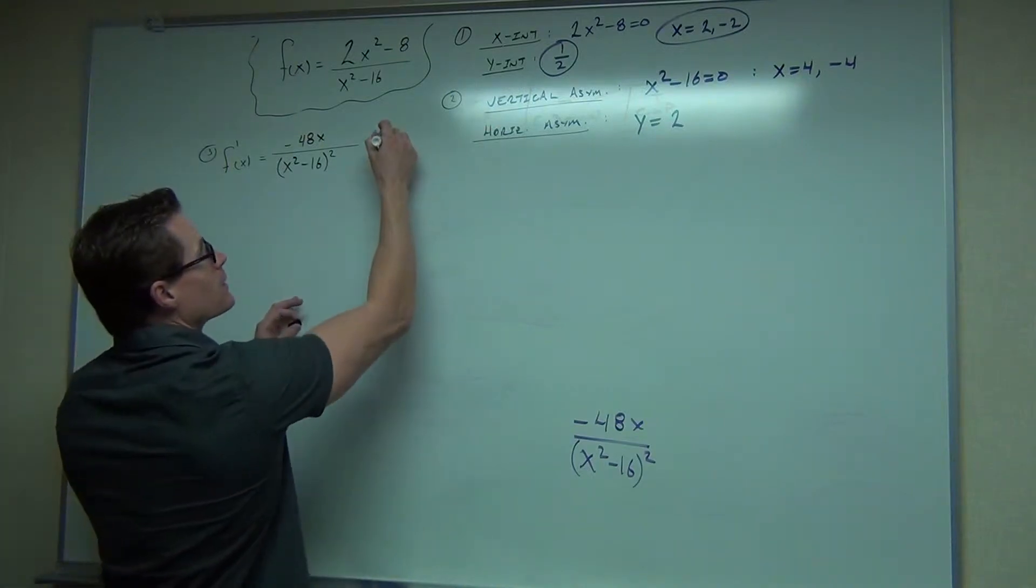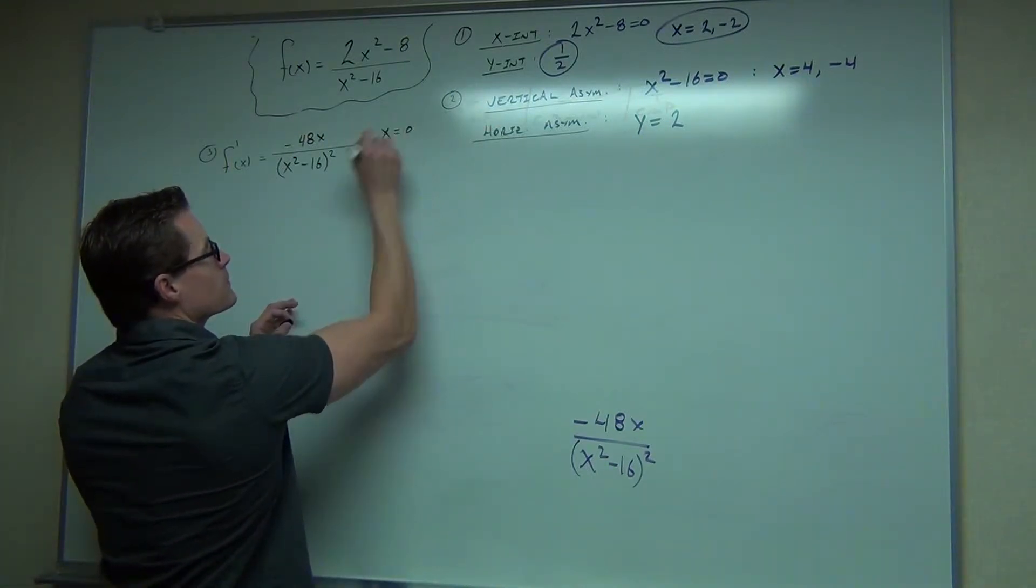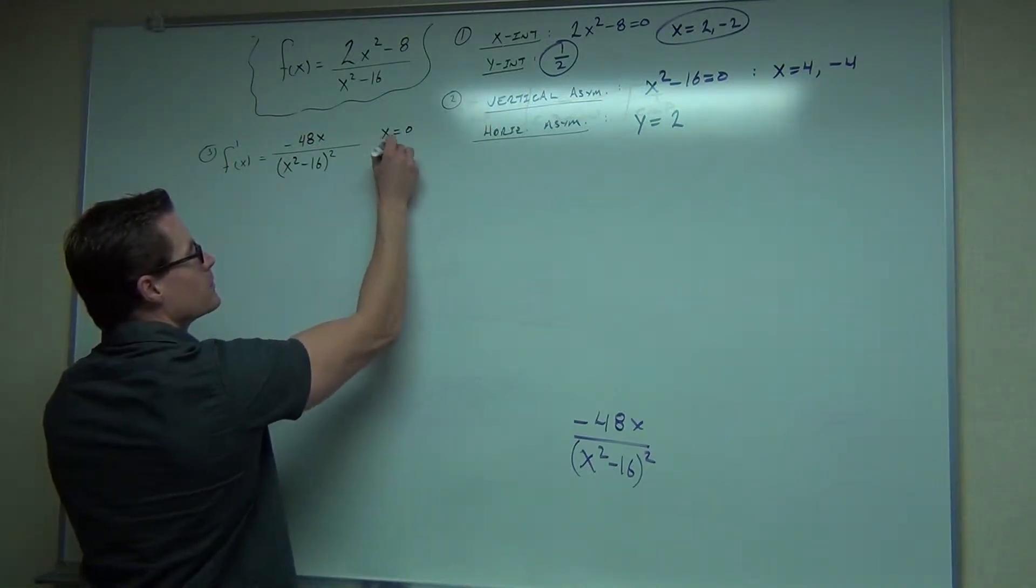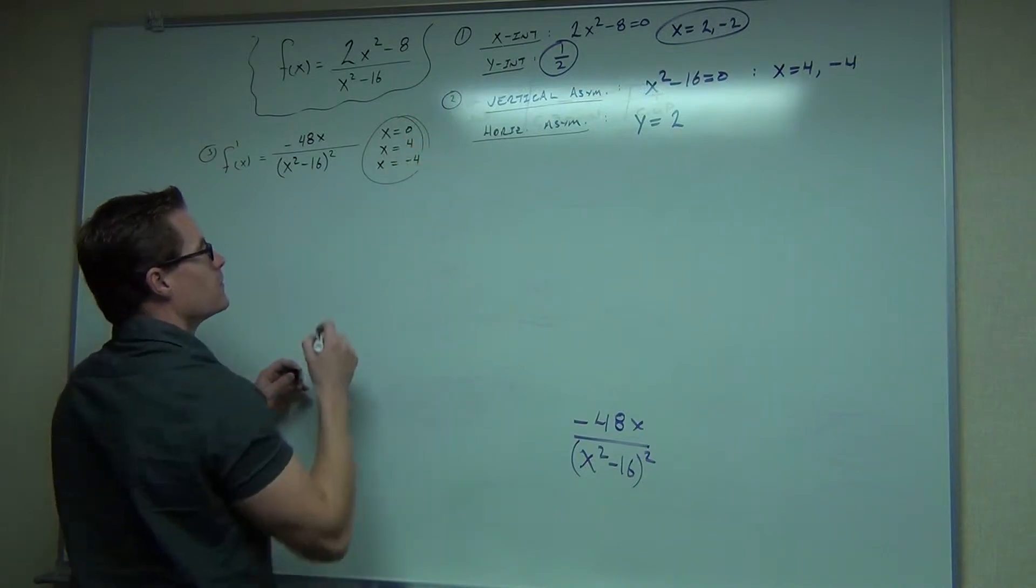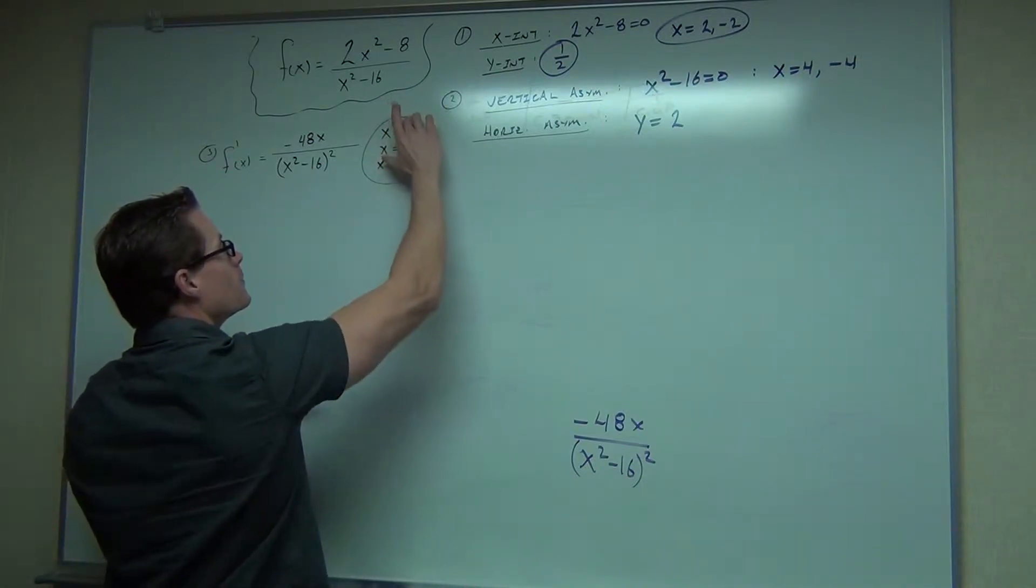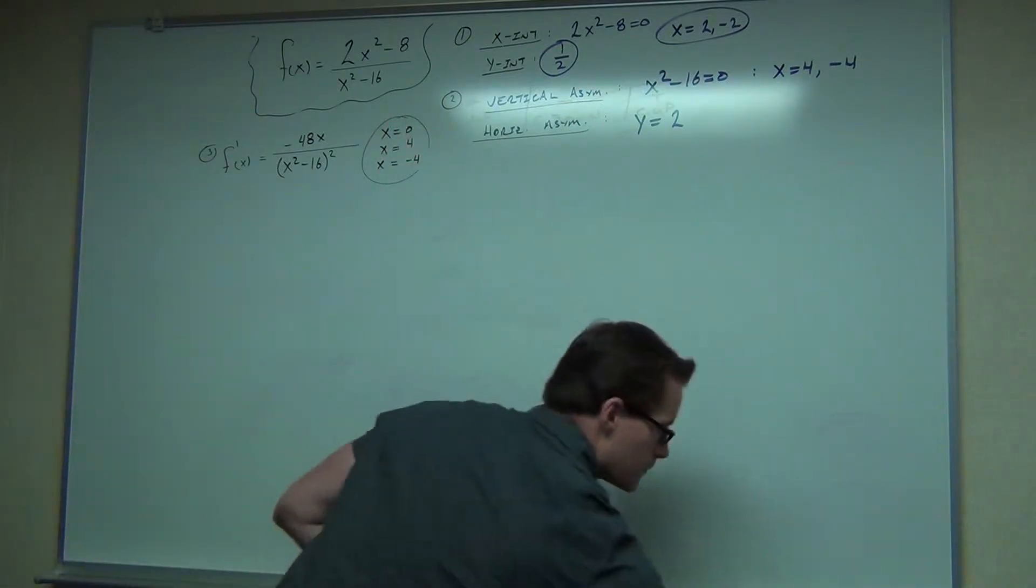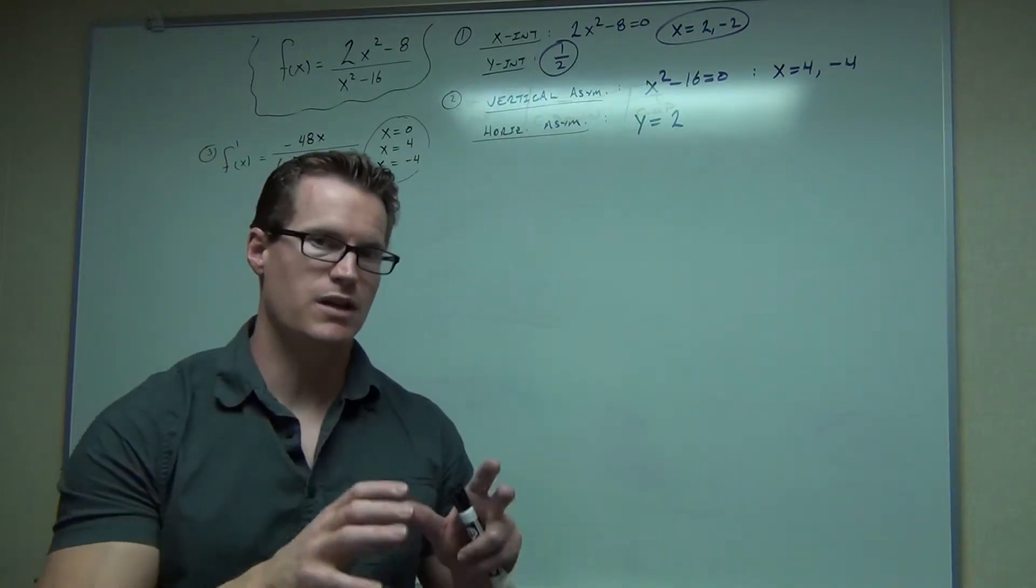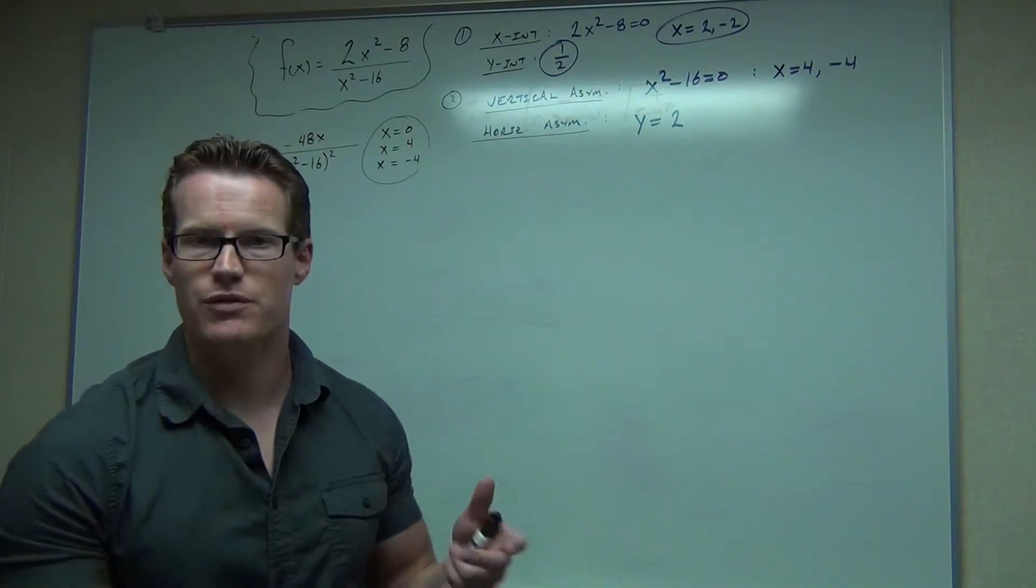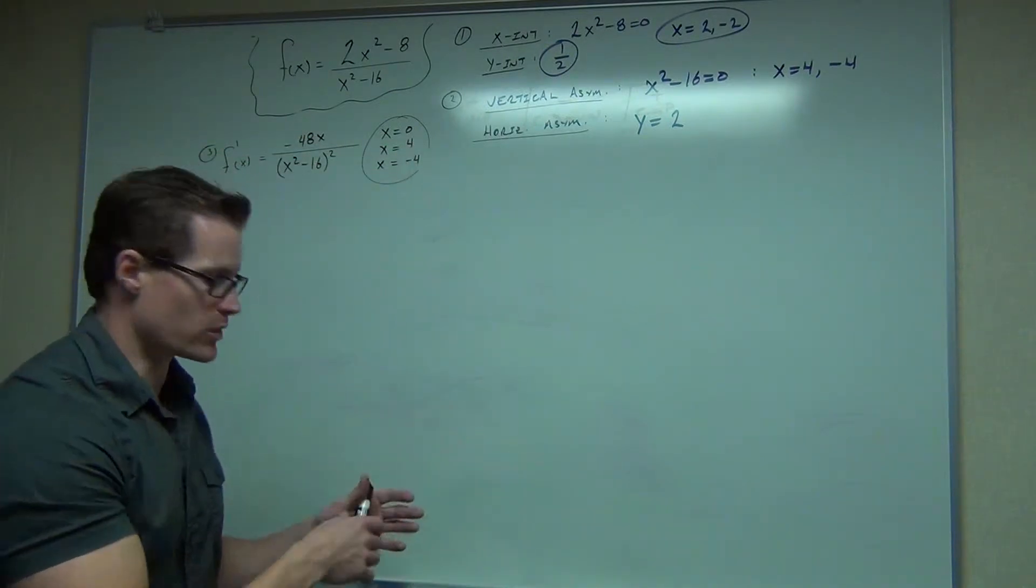And what we got out of that again was zero, 4, negative 4. Okay, second derivative test was going to give you concavity. So let's take the second derivative, see what we get. Again, write this down and erase it when I'm done.